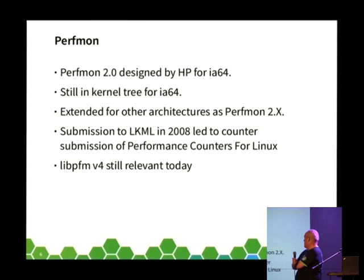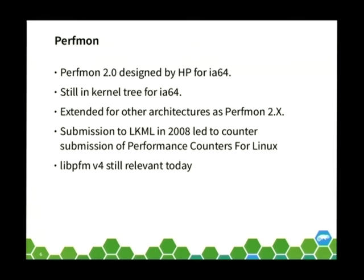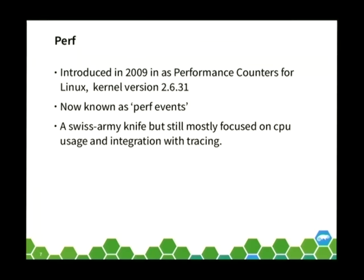A counter proposal called 'performance counters for Linux' came out almost immediately afterwards — a single syscall-based interface with nearly all the complexity pushed into the kernel, and the tool lived in tools/perf rather than out of tree. That got merged into the kernel in 2009, kernel version 2.6.31, and is now known by the almost ungoogleable term 'perfevents.' It is a Swiss army knife of functionality, mostly focused on CPU usage and tracing, but it can also be used as a benchmarking tool or for statistical analysis.